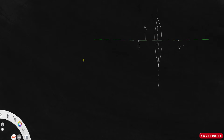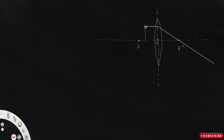Let me draw the ray diagram. I have to take two rays. The first ray is passing parallel to the principal axis, and by the rules of refraction, when it hits the lens it passes through the focus after refraction. The second ray passes through the optic center, and any ray passing through the optic center passes undeviated.